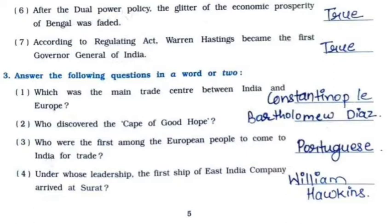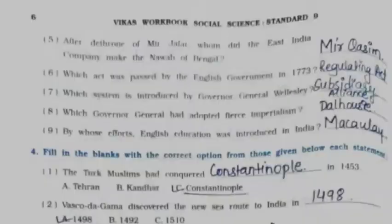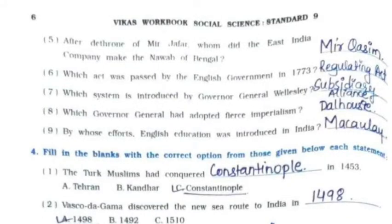Third: Who were the first among the European people to come to India for trade? — It is the Portuguese. Fourth: Under whose leadership did the first ship of the East India Company arrive at Surat? — It is William Hawkins. Fifth: After the throne of Mir Jafar, whom did the East India Company make the Nawab of Bengal? — It is Mir Kasim.